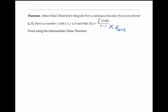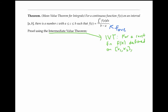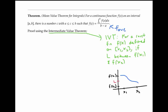The first proof uses the intermediate value theorem. Recall that the intermediate value theorem says that if we have a continuous function f defined on an interval from x1 to x2, and we have some number L in between f of x1 and f of x2, then f has to achieve the value L somewhere between x1 and x2.